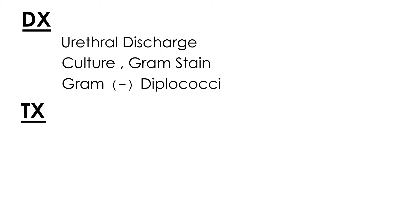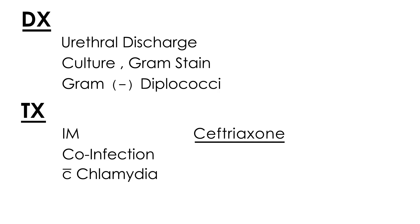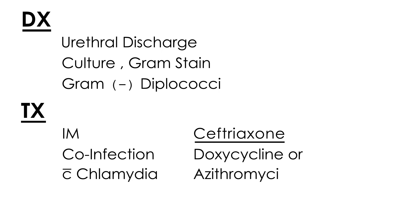Treatment for gonorrhea involves an intramuscular shot of ceftriaxone. Because co-infection with chlamydia is so common, they also treat chlamydia at the same time. In addition to ceftriaxone, you give doxycycline or azithromycin — those are your two choices — given orally as pills.